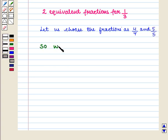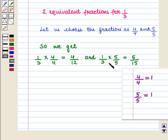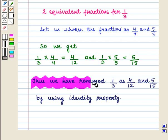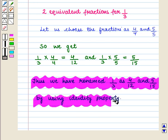We get 1 by 3 into 4 by 4, which is equal to 4 by 12, and 1 by 3 into 5 by 5, which is equal to 5 by 15. Here also we should note that the fractions 4 by 4 and 5 by 5 are equal to 1. Thus we have renamed the fraction 1 by 3 as 4 by 12 and 5 by 15 by using identity property.